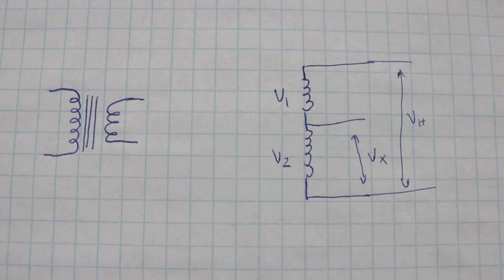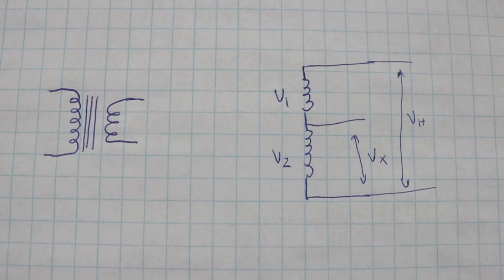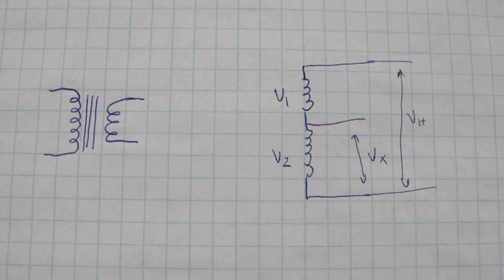The autotransformer also has two coils that are wound around an iron core, the same as the transformer, but the two coils are connected in series.